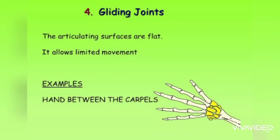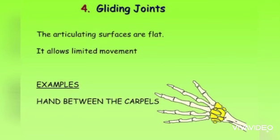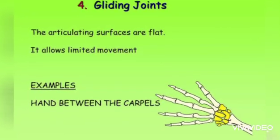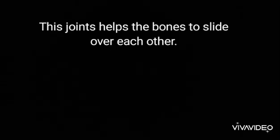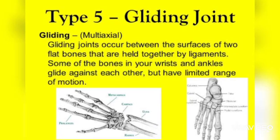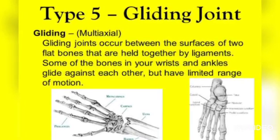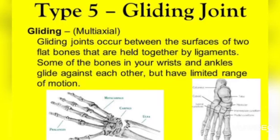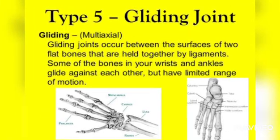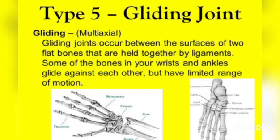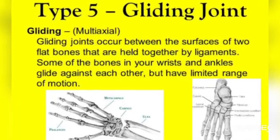Now we will look at the gliding joint. This joint allows movement back and forth or sideways. The articulating surface is flat and it allows only limited movement. This joint helps bones slide over each other — crossing your fingers is an example. Our wrists and ankles have gliding joints, and they are also present in the backbone, helping the back bend easily with limited movement.